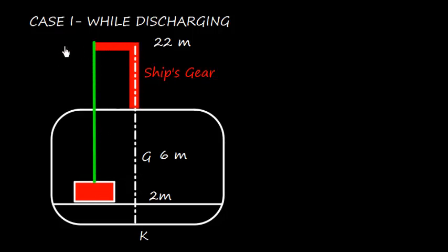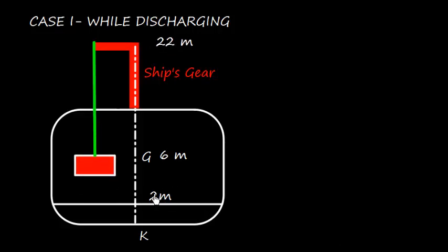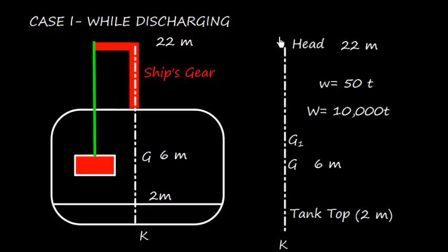See here, the tank top is at 2 meters, the ship's head is 22 meters, and the center of gravity of the vessel is 6 meters. Now I can represent this information on this straight line where this is keel, this is 2 meters, this is G, and this is head at 22 meters. The weight is 50 tons.